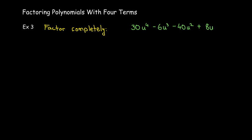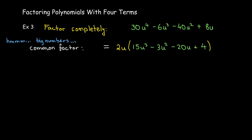So we want to factor completely. Now, here I have u to the power of 4. I also have some big numbers, which makes me think or reminds me that I should always be looking for a common factor. And indeed, here I can save some work because there is a common factor of 2u that gives me,